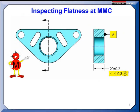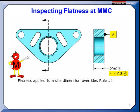What this does is it creates a boundary. So when I apply this, it overrides rule one. Without this flatness, this feature or part would have to fit through a slot at 20.2, also known as an envelope or a go gauge.